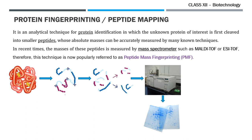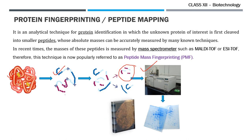Here we have a protein. The protein is first broken into or digested into smaller peptide fragments. These peptide fragments are subjected to the mass spectrometer. The result is analyzed in the form of specific patterns of peptide fragment arrangements which generate unique fingerprints.